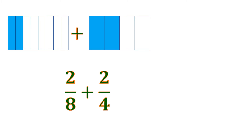So 2 fourths can be transformed — we can put some slices. We're going to slice each part into 2 so that it becomes 8 slices, which is the same as the 2 eighths. So there are now 4 shaded parts out of 8 from 2 fourths, and now they fit with each other and we can combine them.